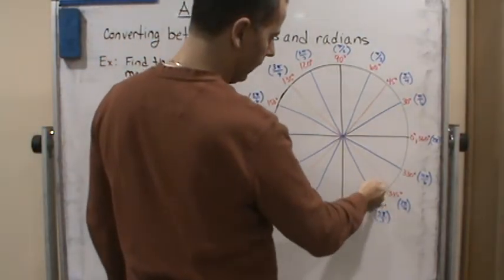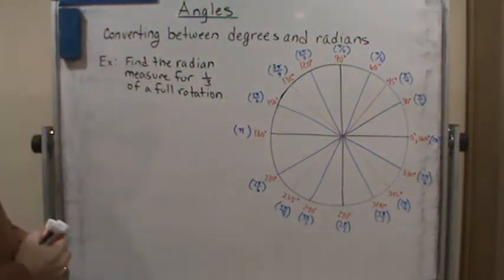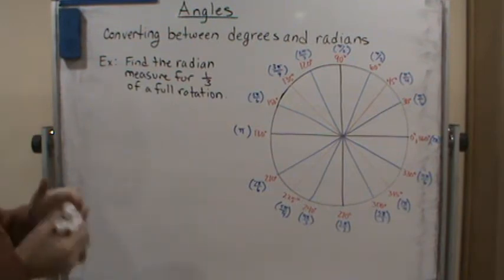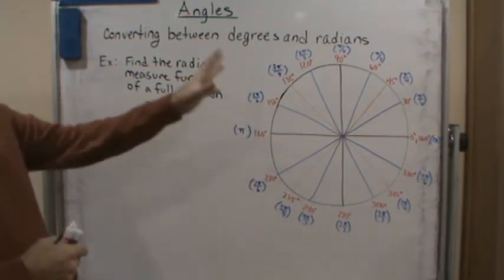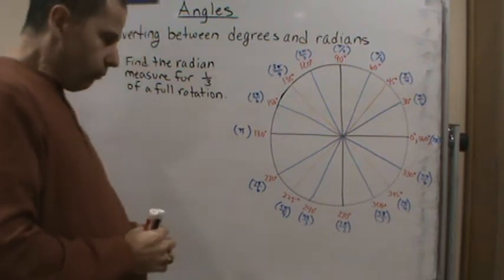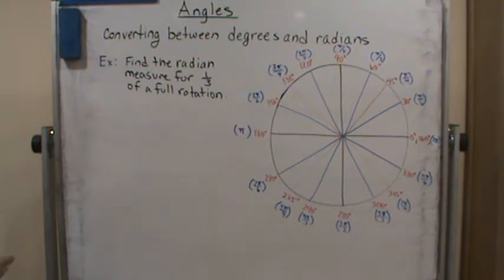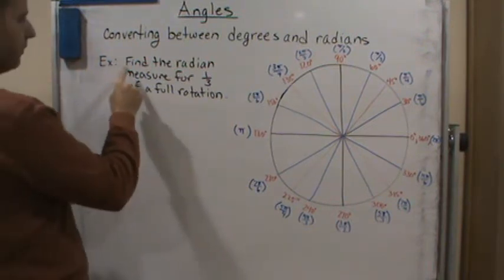Okay, and so these are the common ones you should know. And once you know them, work with them, it's easy to get this by memory. But what if I wanted to find a radian measure, for example? In this example here it says find the radian measure for one-third of a full rotation.